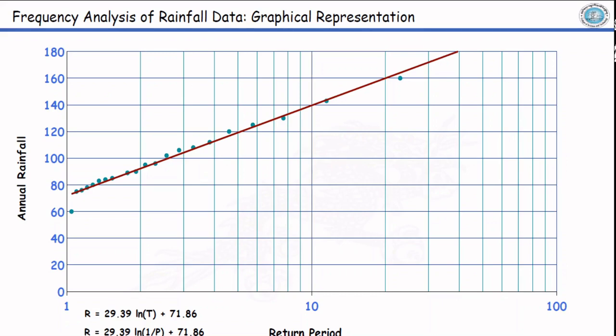Here I have given the equation, that is magnitude of rainfall is equal to 29.39 times ln(T) plus 71.86. Likewise, we can convert this T into 1 by P, and we have now a relationship between the magnitude and the probability. From this chart, we can answer the questions.